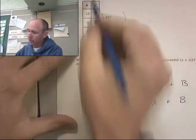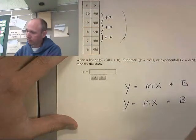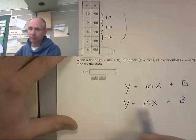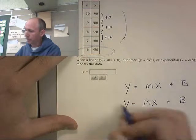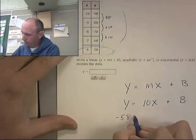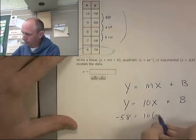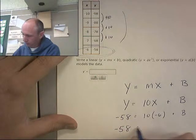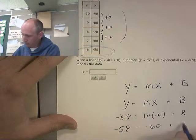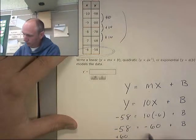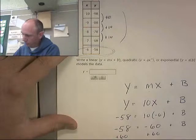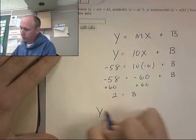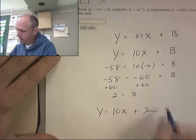The b is different in the exponential. So I have y equals 10x plus b. And if we plug in a value for x and y, any of these, do you care which one? No, let's go with that one. We'll plug that in for x and y and get b. So I get b equals 2. So my equation is going to be y equals 10x plus 2.